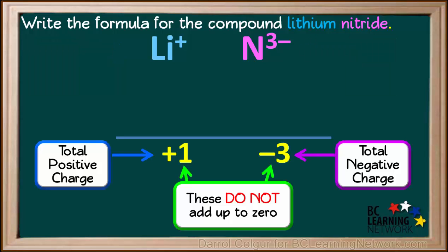We can see that when we have one lithium ion with a charge of positive 1 and one nitride ion with a charge of negative 3, the charges do not add up to zero.